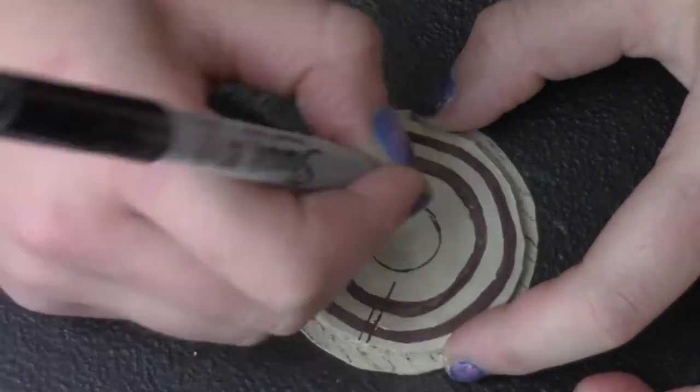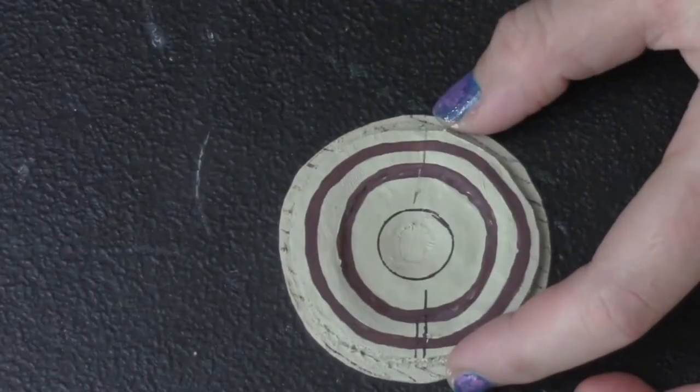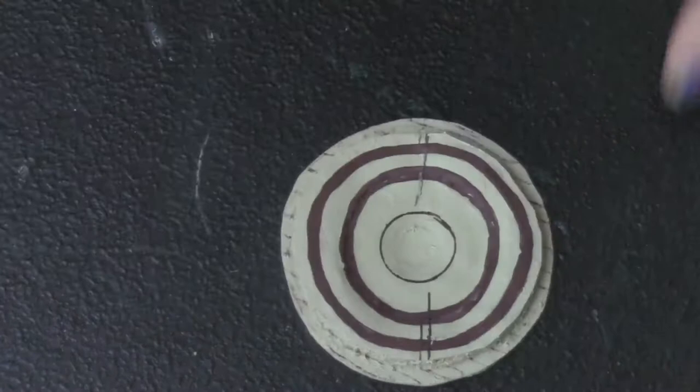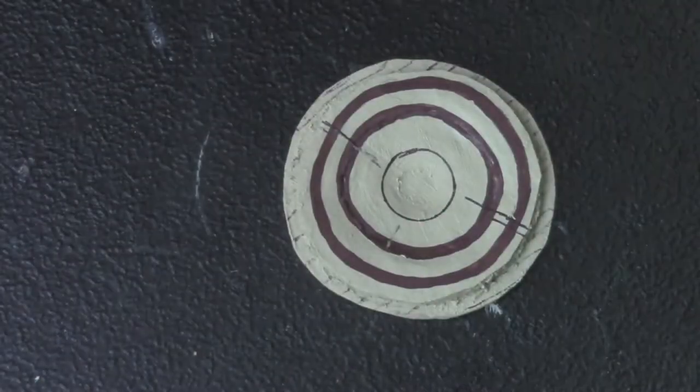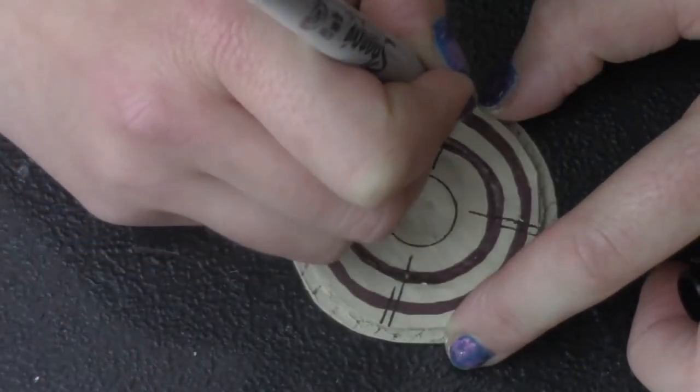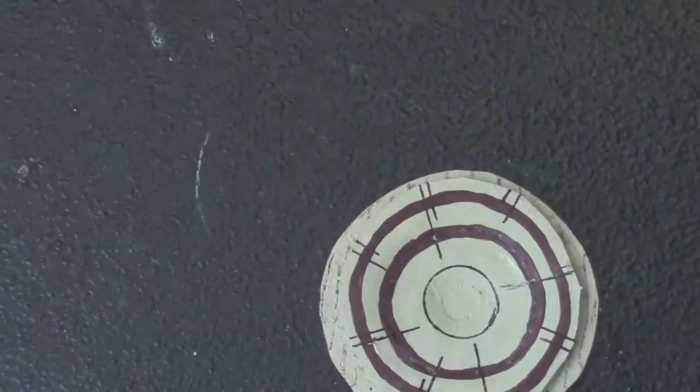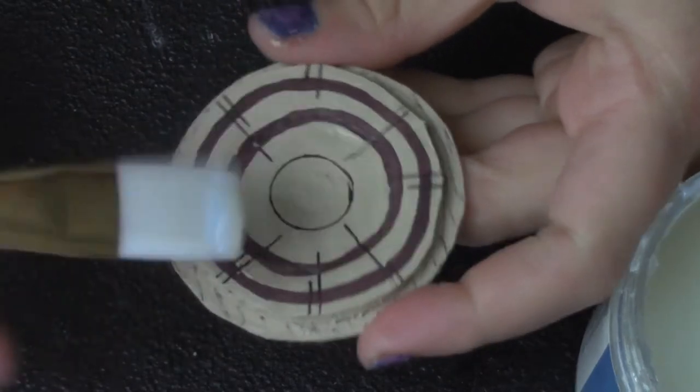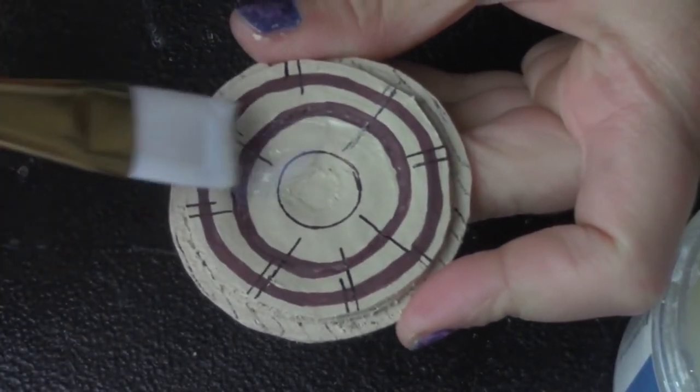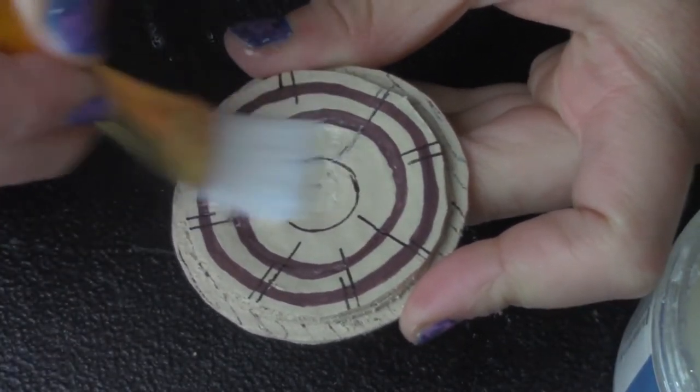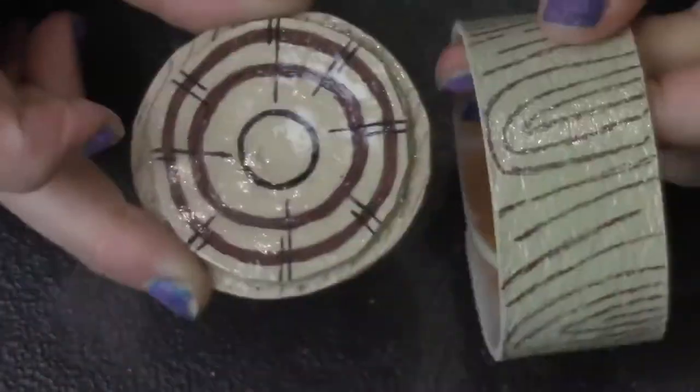Then, using the Sharpie, add lines to the outer part of the log pose. It should sort of look like north, south, east, west, but I think these are just designed lines that they use in the anime. Then, add a layer of triple thick to the whole face of that and set it aside to dry. Once it's dry, glue it to the center of your wristband, put pressure on it, and set it aside to dry.